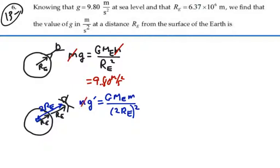And if we get rid of the masses here, your mass, we have this is equal to G mass of the earth over the radius of the earth squared times one-fourth.